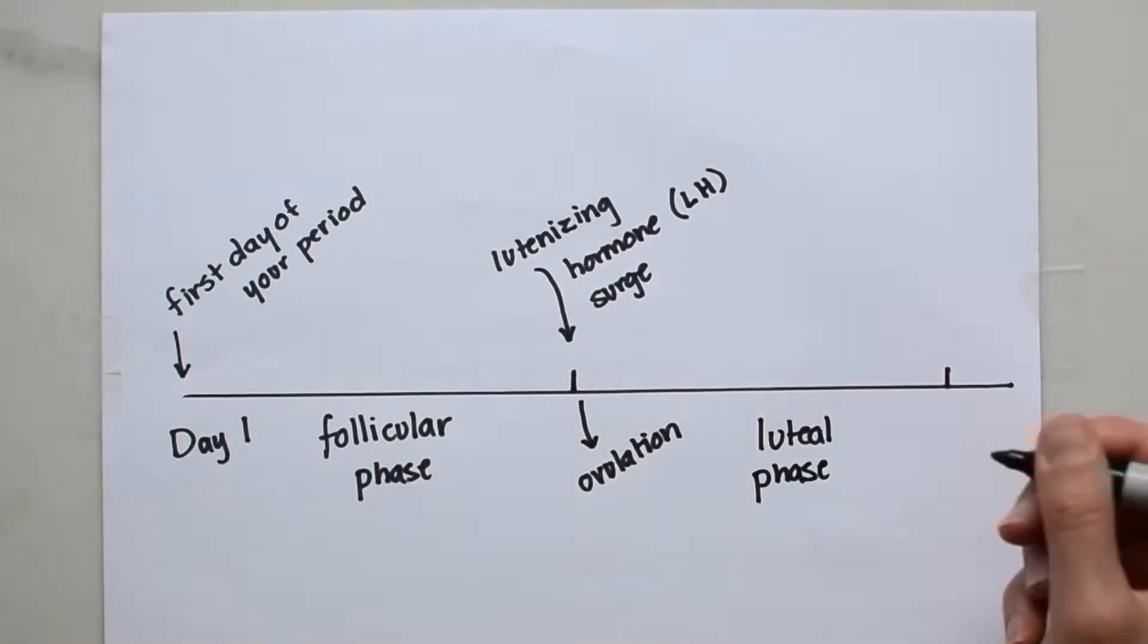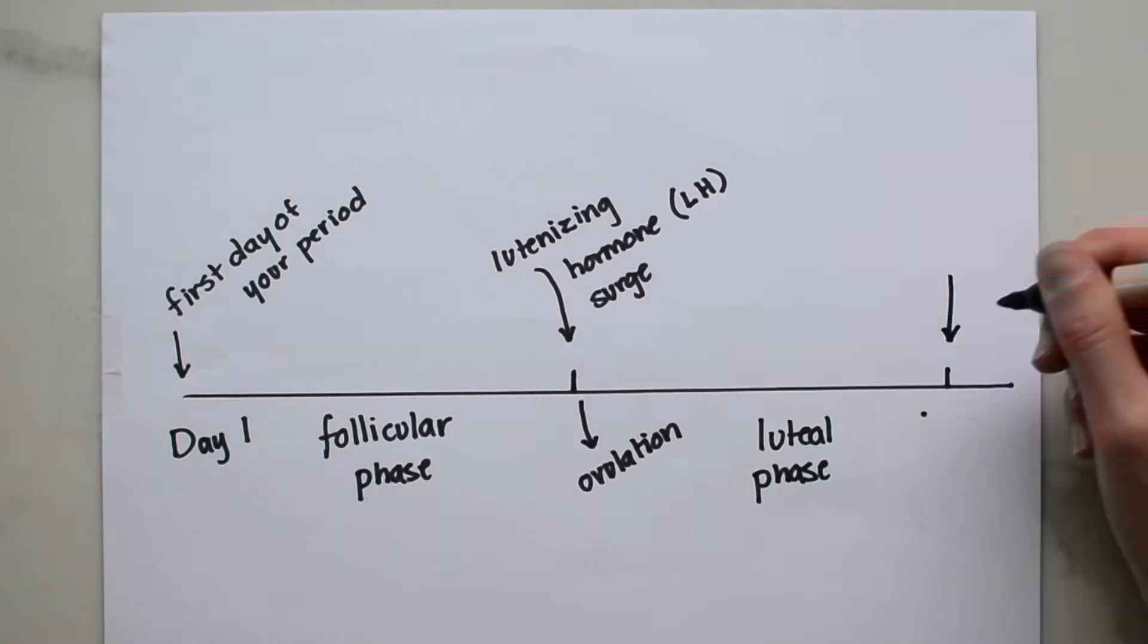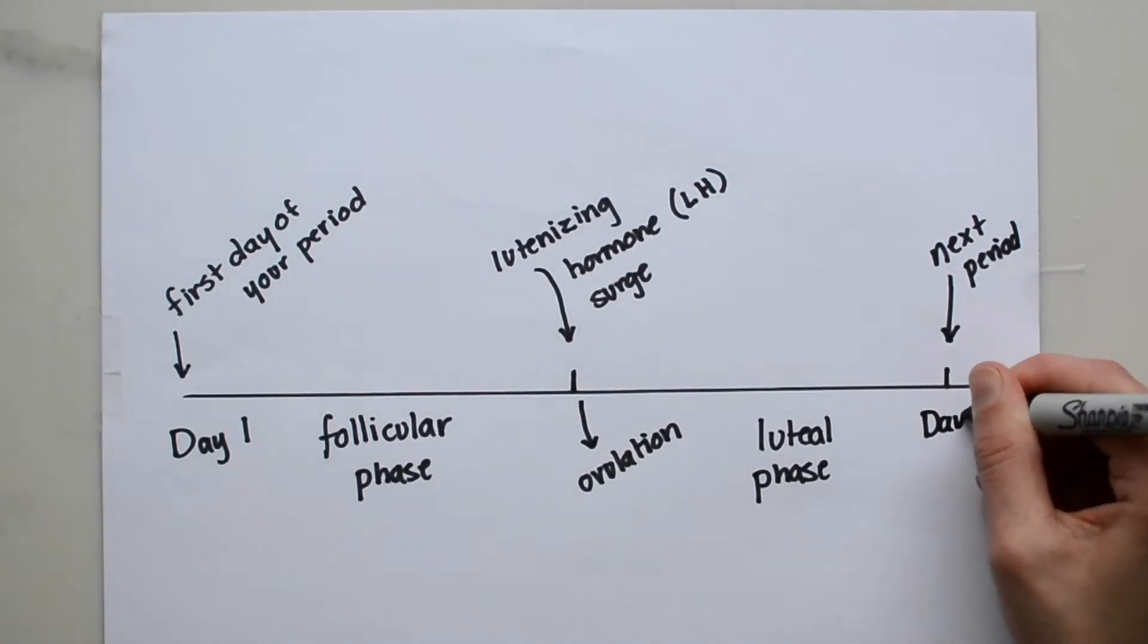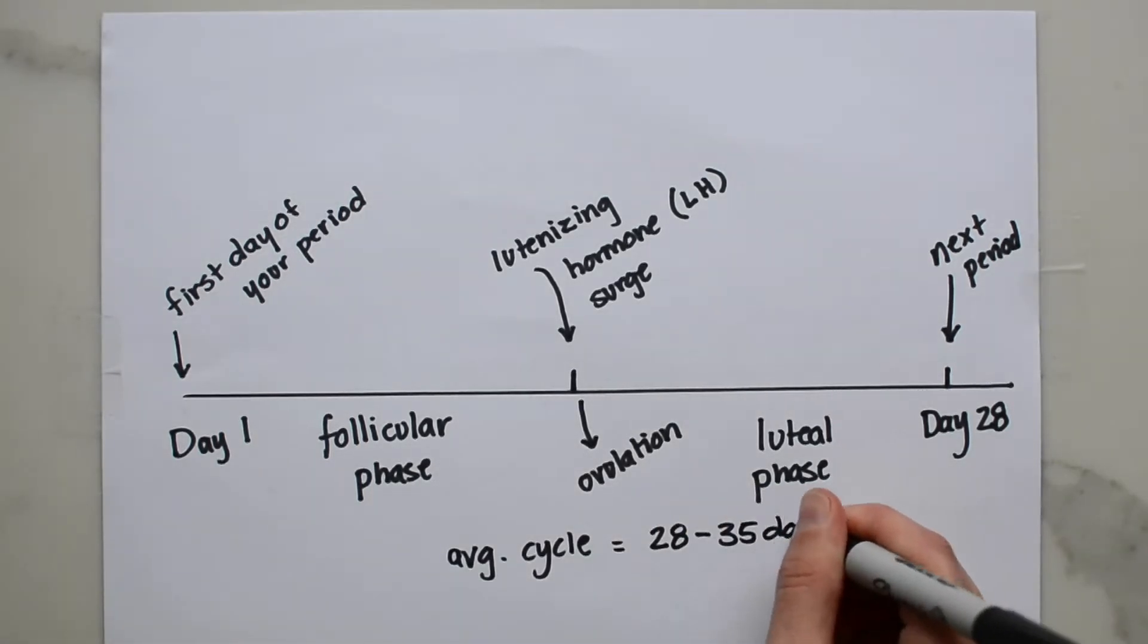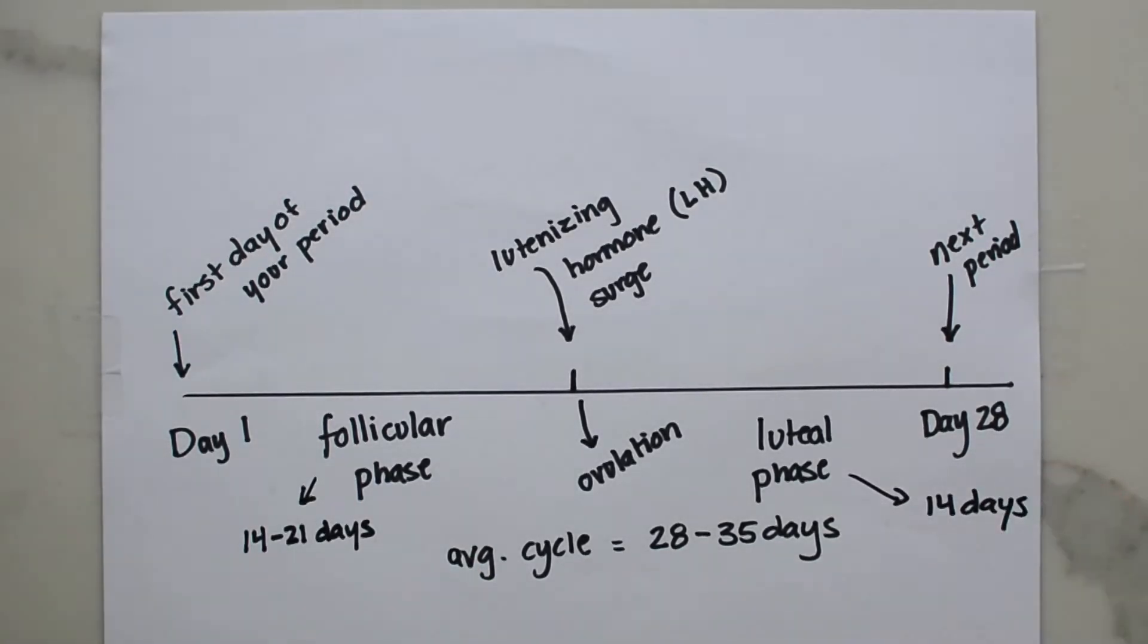The luteal phase begins on the day of the LH surge and ends with the beginning of your next menstrual cycle. The average adult menstrual cycle lasts 28 to 35 days with approximately 14 to 21 days in the follicular phase and 14 days in the luteal phase. There's relatively little variability in cycle length when women are between the ages of 20 to 40 years. However there can be quite a bit of cycle variability in the first five to seven years of one's cycle and in the 10 years before a woman's period stops.